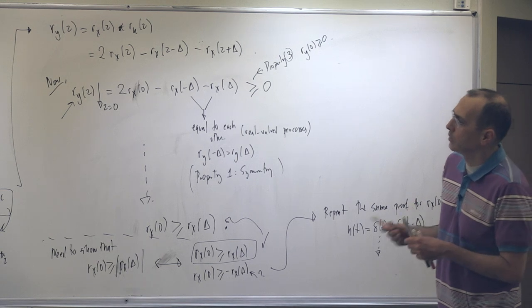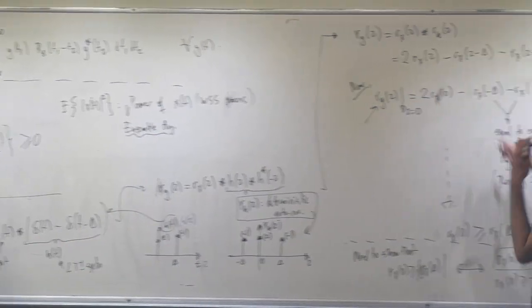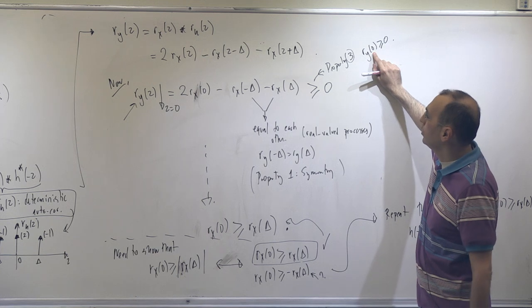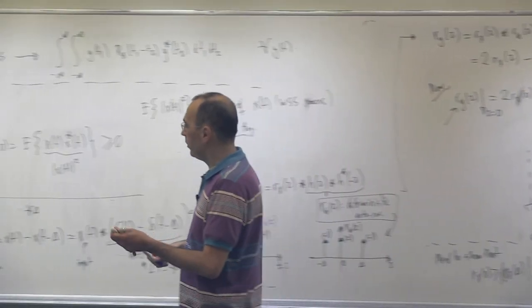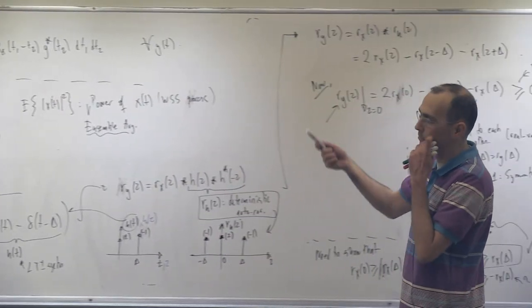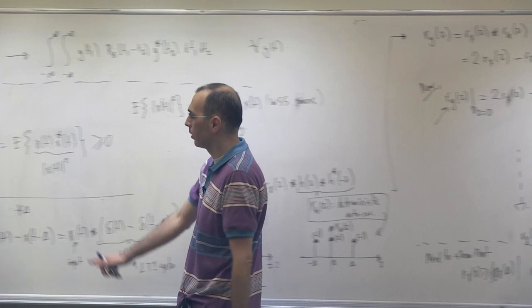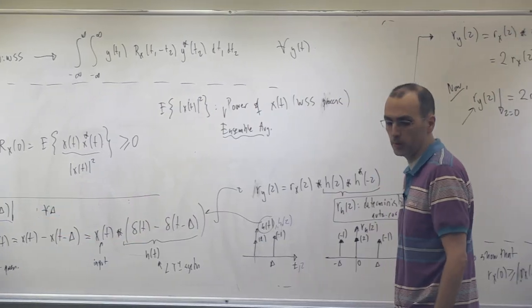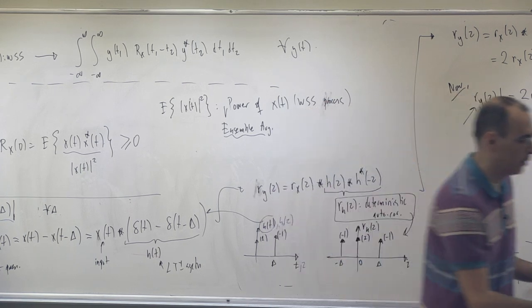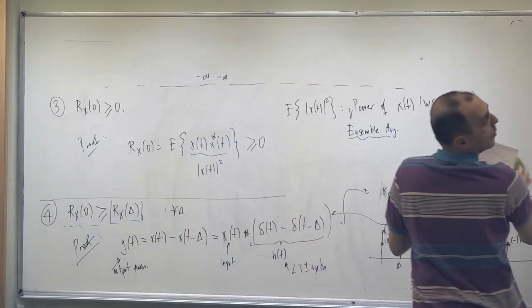We have practiced LTI filtering of random processes and WSS processes, and verified properties including non-negativity at lag zero, symmetry, and the peak-at-zero property. Now let's have some exercises. The example: check whether the following functions can be autocorrelation functions or not.